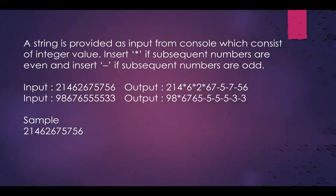The second question was quite straightforward and easy. A string is provided as input from console which consists of integer values. Insert a stick if subsequent numbers are even, and insert a hyphen if subsequent numbers are odd.